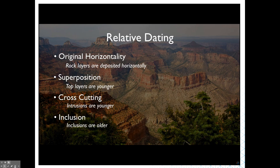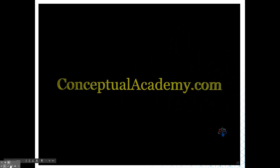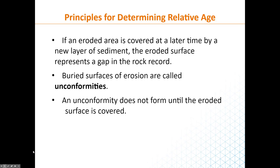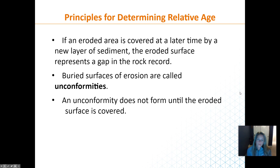When figuring out relative age, sometimes pieces are missing. The rock record is like taking pages out of a book — maybe a chapter is missing here and there, and we have to put it together with missing pieces. Those missing intervals are called unconformities, which are essentially erosional features.